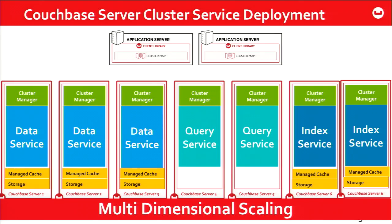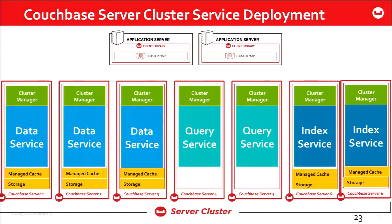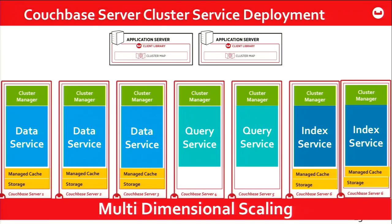The whole idea is a SQL-like query language that provides much better query processing capability in addition to the existing key-value APIs. Once you have nodes running independent services, you can also size them differently depending on your application need and workload variation — that's what we call multidimensional scaling. You can scale your data, query, and index by deploying them on different numbers of nodes and different hardware. You can still go back to uniform deployment, but you have the flexibility of deploying them on distinct hardware.